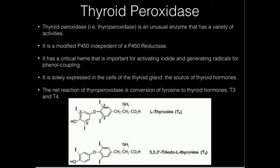Thyroid peroxidase is solely expressed in the cells of the thyroid gland, which is the source of thyroid hormones. The two main thyroid hormones are thyroxine, which is T4, and triiodothyronine, which is T3. Although T3 is the main active one.